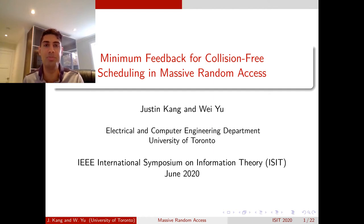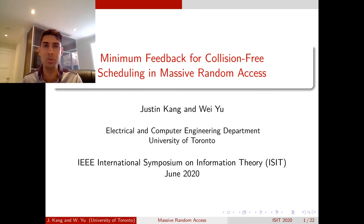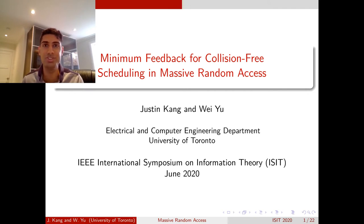Welcome to the presentation of our paper, Minimum Feedback for Collision-Free Random Access. This is a joint work by myself, Justin Kang, and my supervisor, Professor Wei Yu at the University of Toronto. One of the main contributions of this work is the formulation of a massive access problem in finding the most efficient feedback scheme for user scheduling. We have achievability and converse results for the minimum feedback rate required to ensure users do not collide. We also show that the problem is intimately related with a problem in perfect hashing theory.